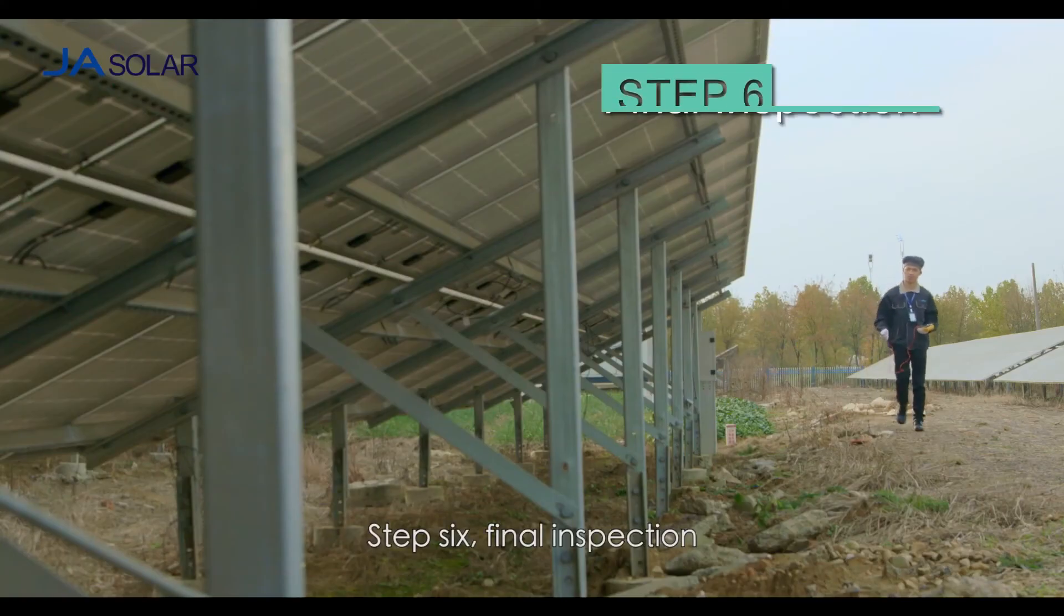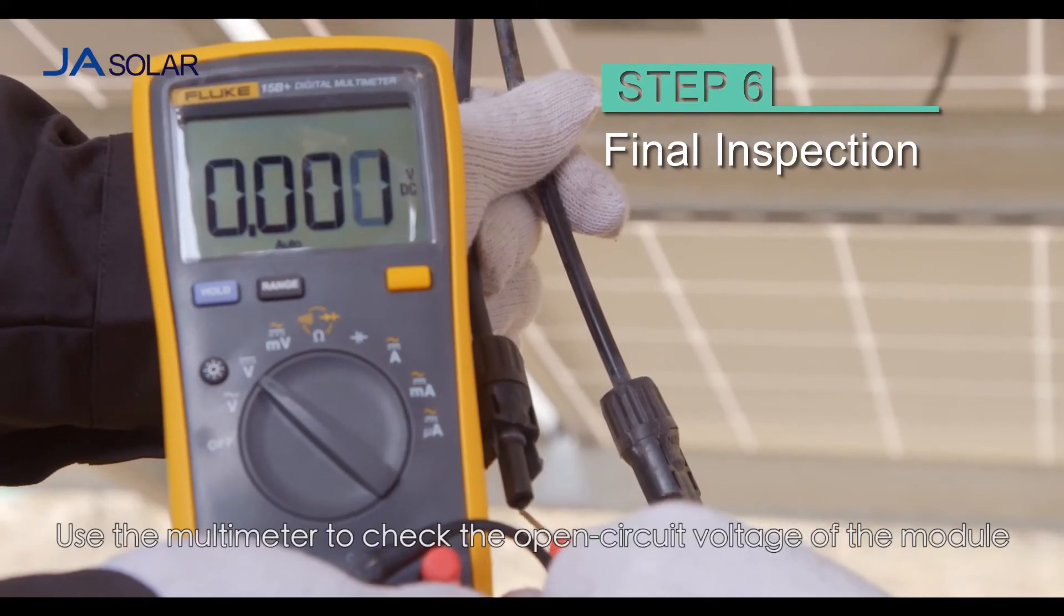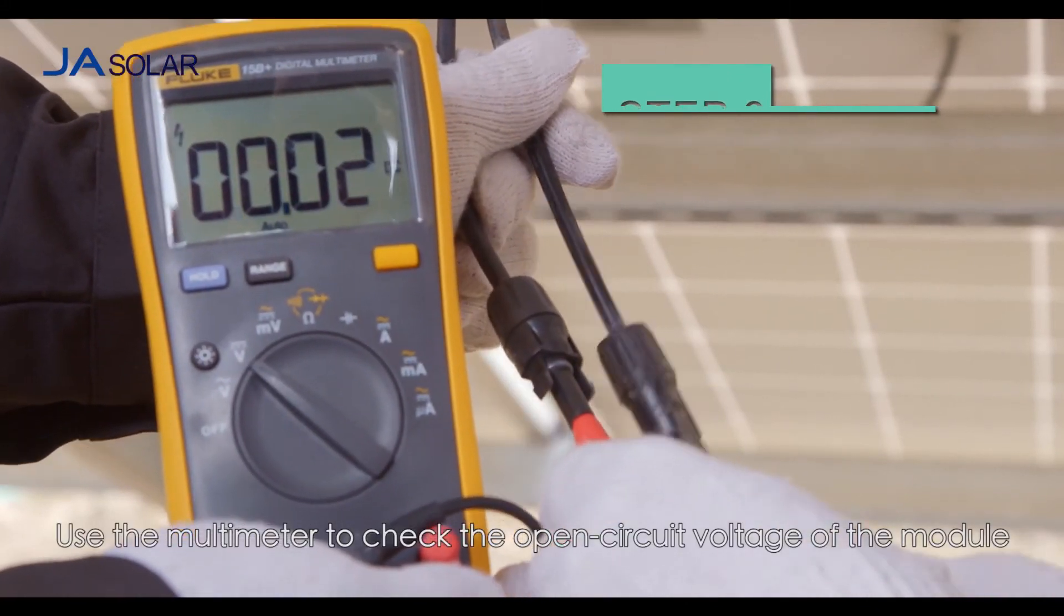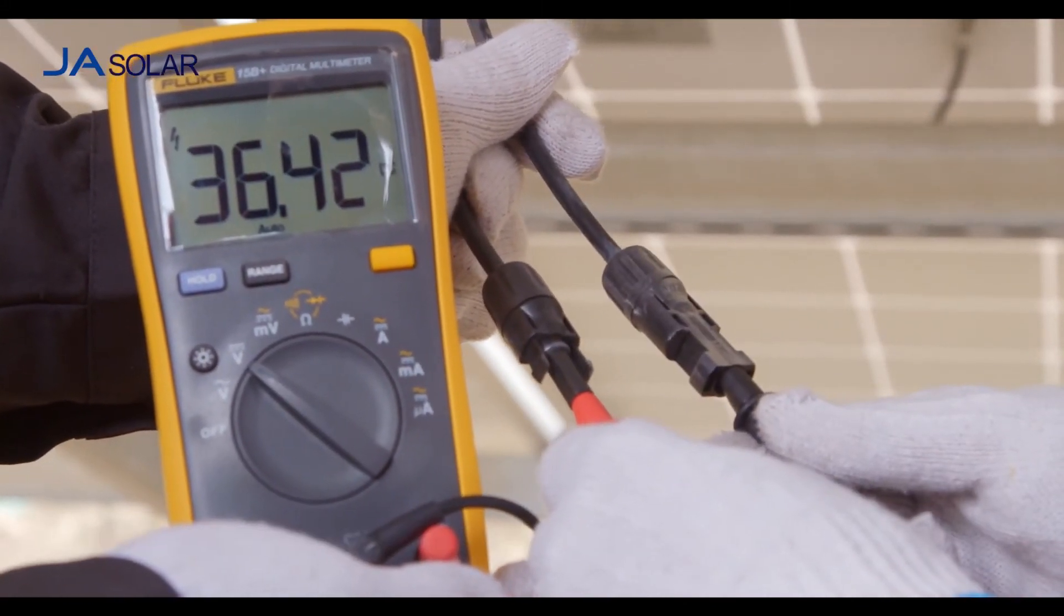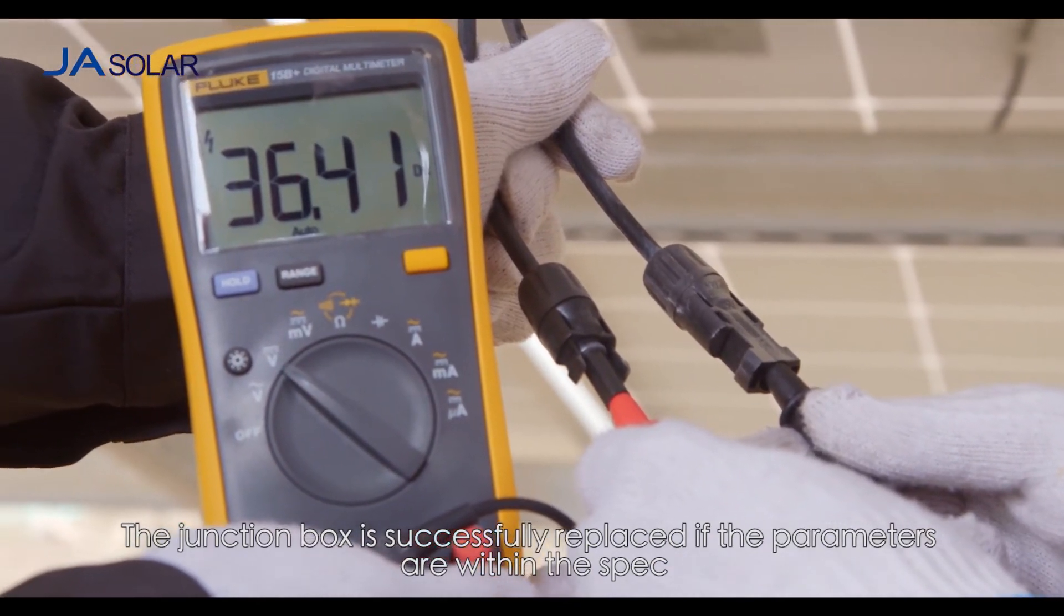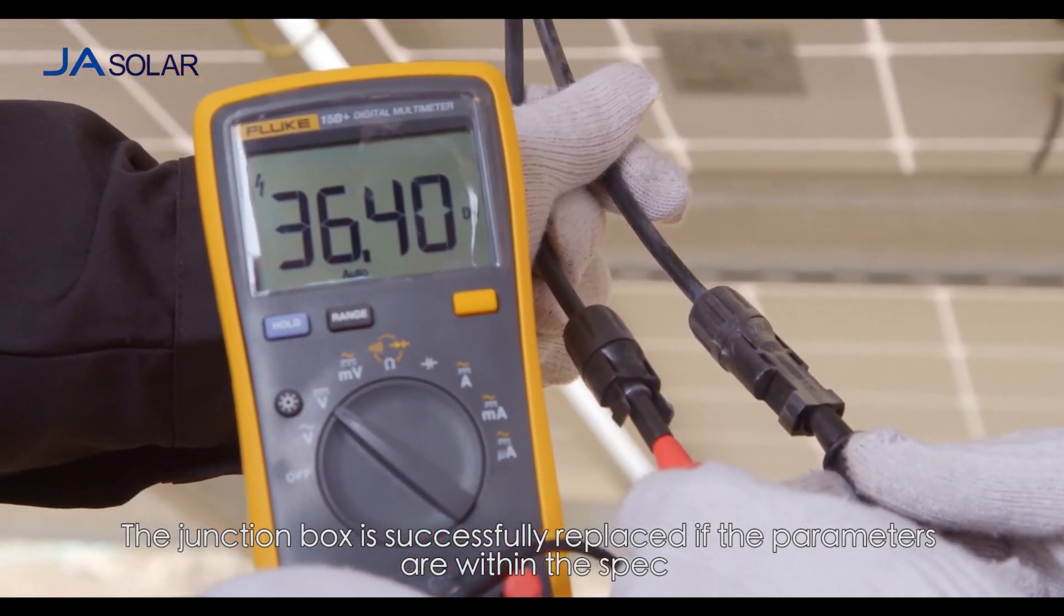Step 6: Final inspection. Use the multimeter to check the open circuit voltage of the module. The junction box is successfully replaced if the parameters are within the spec.